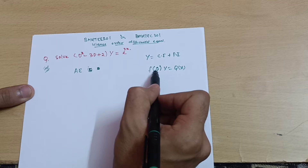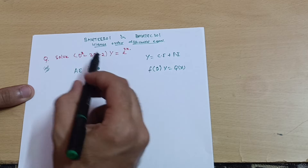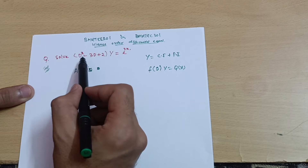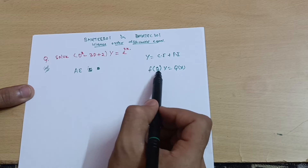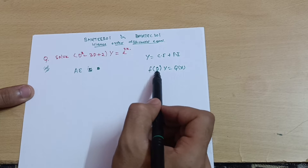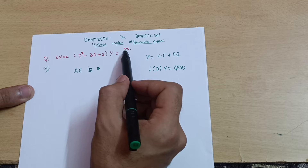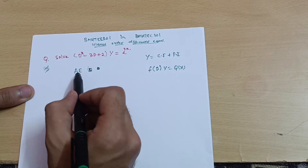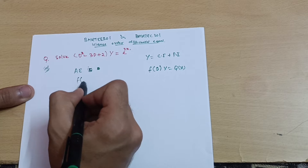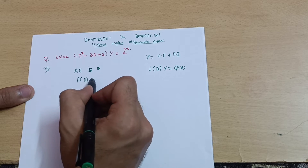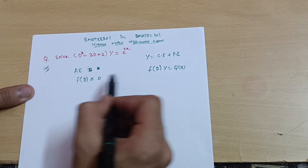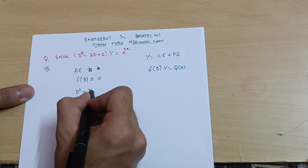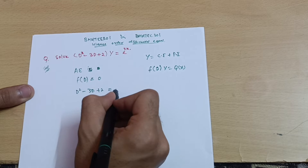To find the auxiliary equation, we set f(D) = 0. First, check that the given equation is in the standard form f(D)·y = Q(x). Since it is in terms of D, it matches. Now for the auxiliary equation, f(D) = 0 gives us: D² - 3D + 2 = 0.